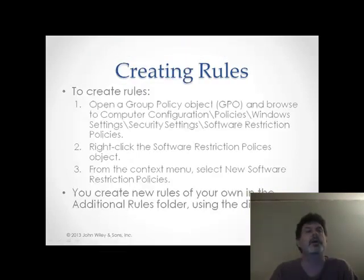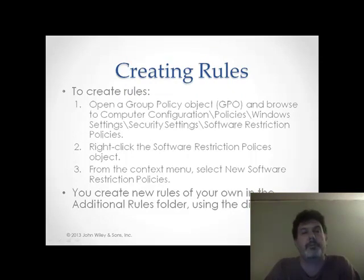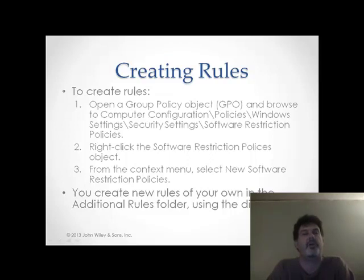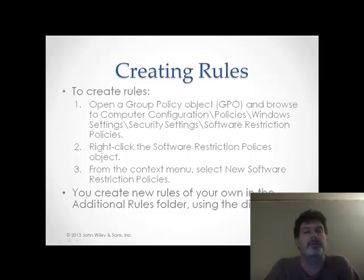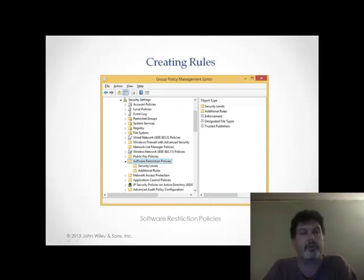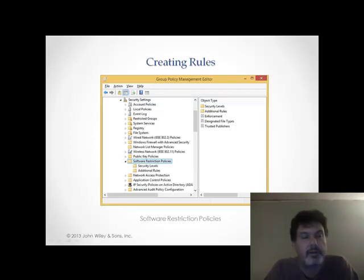Now, in order to create these rules, you have to go into the group policy object and browse to the computer configuration, policies, Windows settings, security settings, software restriction policy folder. Right-click in the software restriction policies object, and in the context menu, select the software restriction policies. You'll end up with a screen that looks a little like this, and of course you can create additional rules as needed.